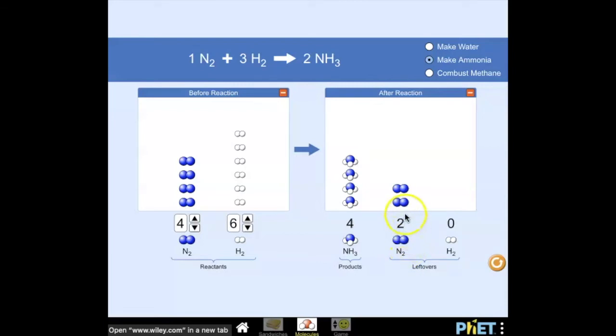In order to get this thing to react, I have to essentially add another six hydrogen molecules. In other words, I need three hydrogen molecules for this, three for that. When I do that, let's get this to count up to six.